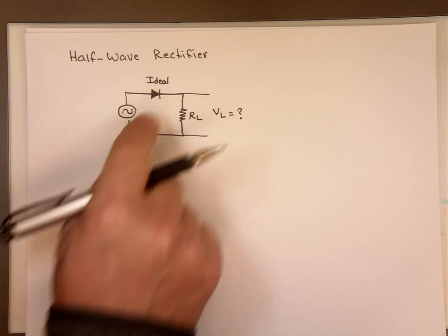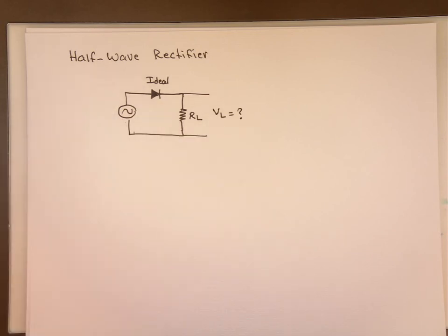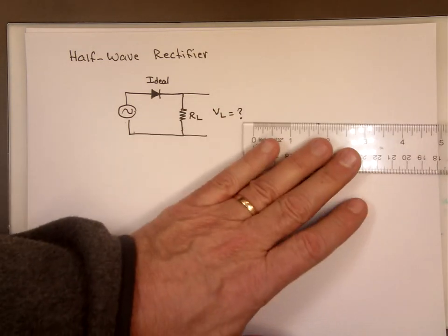First, if we make the assumption this is an ideal diode, what does that mean? If you recall when we did our approximations for a diode, that's your first approximation.